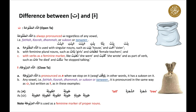On the other hand, ta marbuta is pronounced as 'ha' when we stop on it as waqf — in other words, it has a sukun on it. Ta marbuta with any vowel — fatah, kasra, damma, sukun, or tanween — is pronounced in the same way as 'ta.' Examples of ta marbuta sounding as 'ha': shajara/ash-shajara meaning 'tree,' and tawila/at-tawila meaning 'tall.' Ta marbuta is used as a feminine marker for proper nouns.